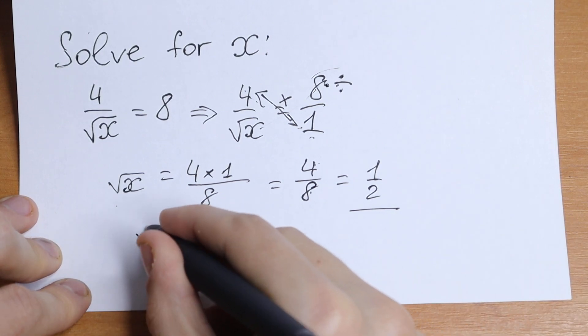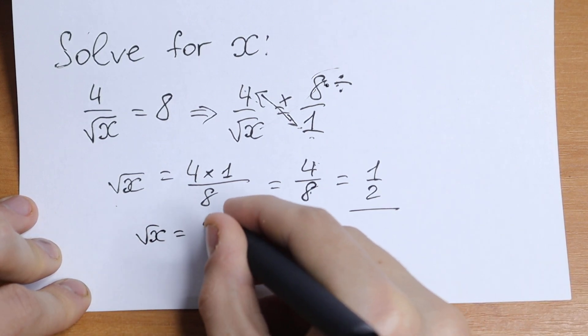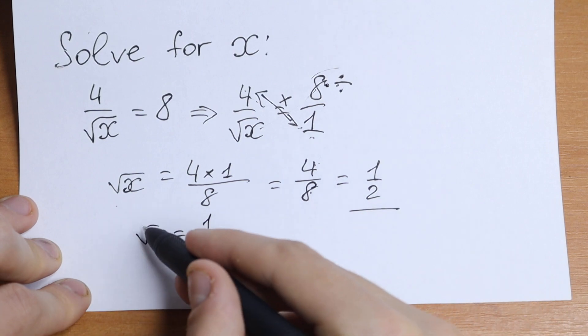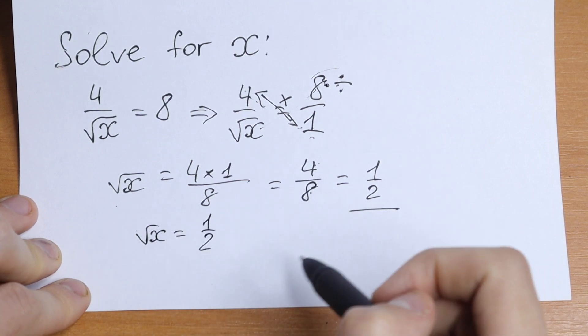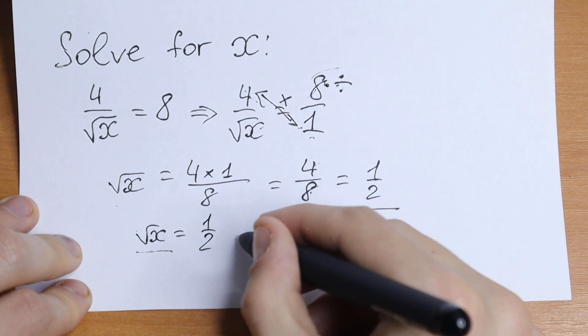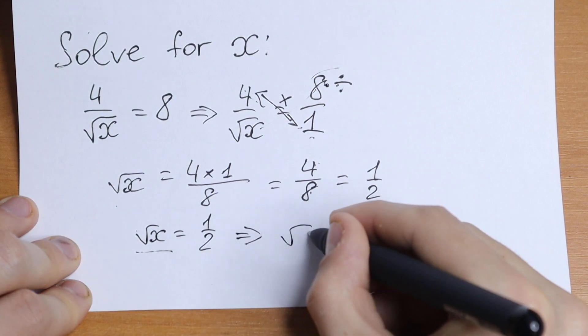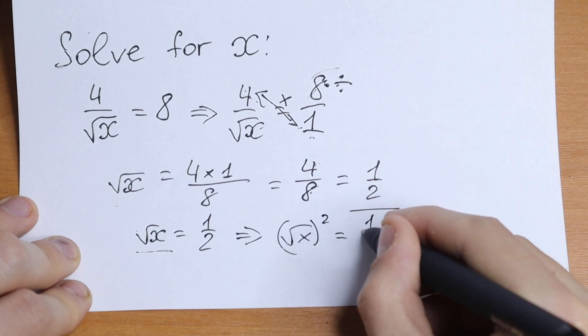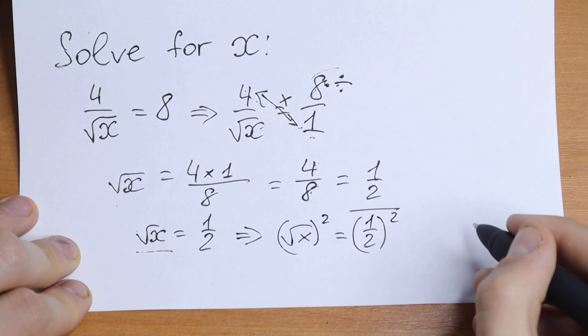So let's go next. We will have square root of x equal to 1 half and if we want to solve it we need to raise both sides to the second power. As a result we'll have only our x right here. So what I do here? Square root of x to the second power equal to 1 half to the second power.